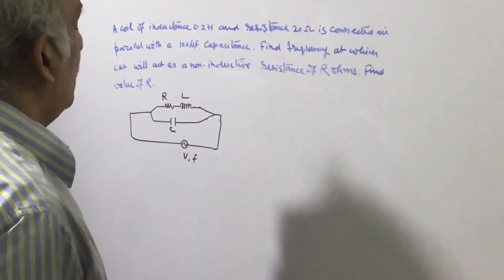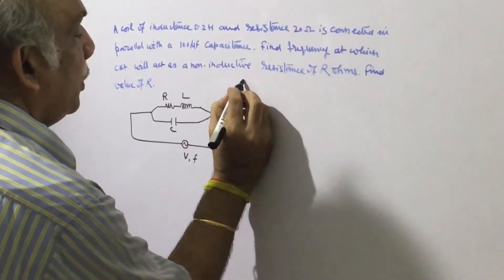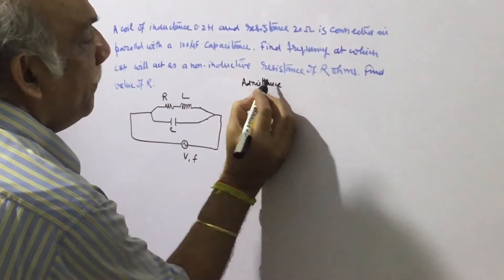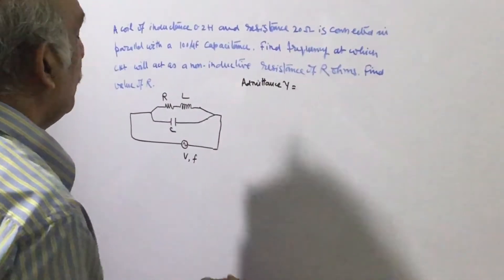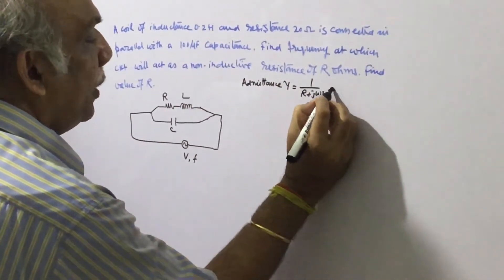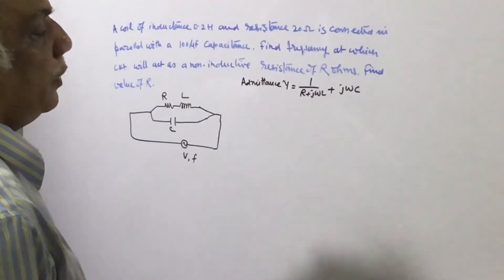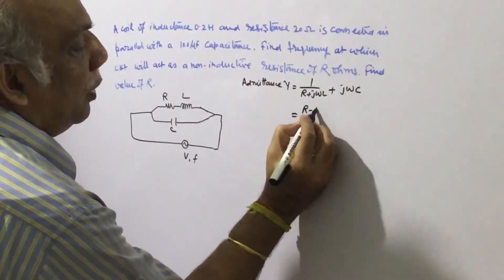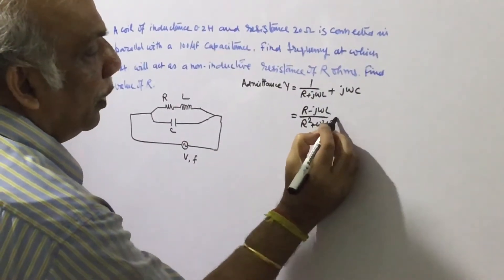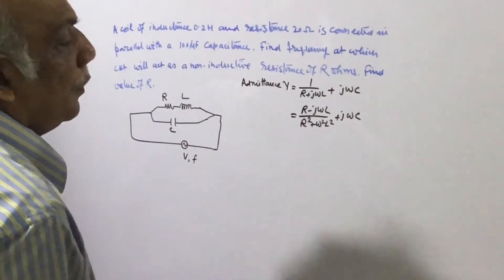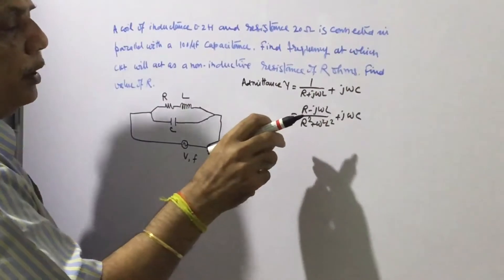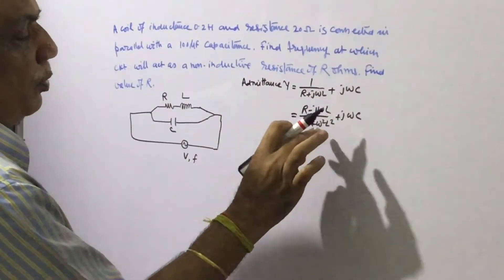So, we can write the expression for admittance as Y equal to 1 upon R plus J omega L plus J omega C. So, this we can write R minus J omega L divided by R square plus omega square L square plus J omega C. So, we just rationalize the denominator. We multiply it by R minus J omega L in the numerator, and this denominator becomes R square plus omega square L square.